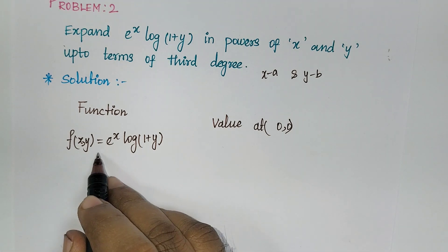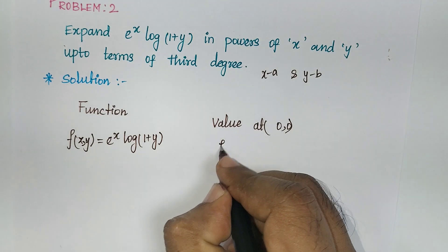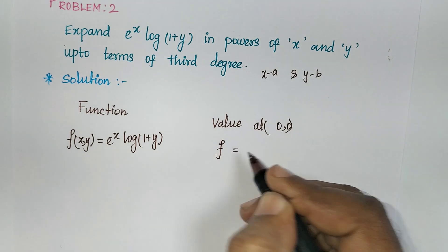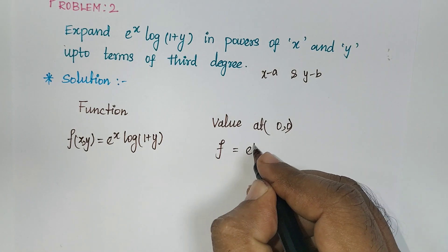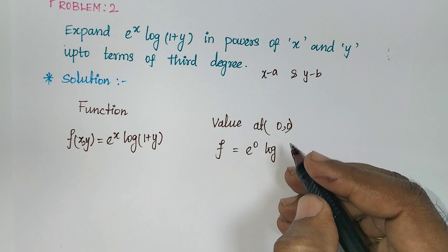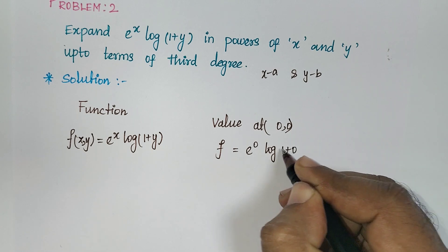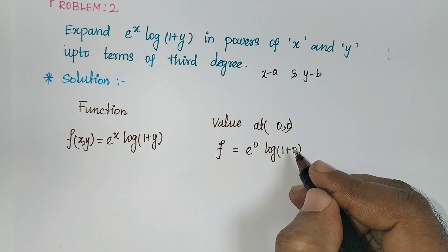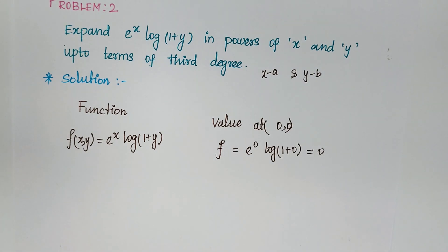First, directly substitute the point (0, 0) into the function. So f(0, 0) = e^0 * log(1 + 0) = 1 * log(1) = 1 * 0 = 0. So your function value f is 0. This is the first term in your formula.